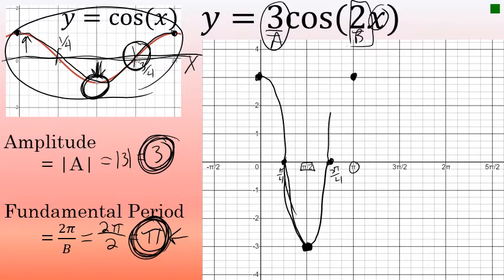Joining those five points with a smooth curve shows one cycle of y equals three cosine two x. It has the same general shape as y equals cosine of x — beginning at the top of the amplitude, traveling down to the bottom halfway through one cycle, then back up to the top. This is what the graph of three cosine two x looks like from zero to pi.